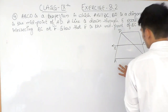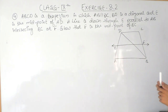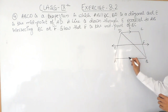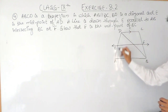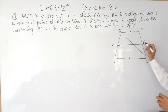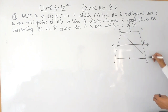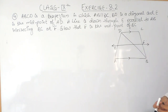Now ABCD is a trapezium where DC is parallel to AB. E is the midpoint of AD, and through E if I draw a line parallel to AB, you have to find out — or you have to show — that this line intersecting BC at its midpoint, meaning F is the midpoint.